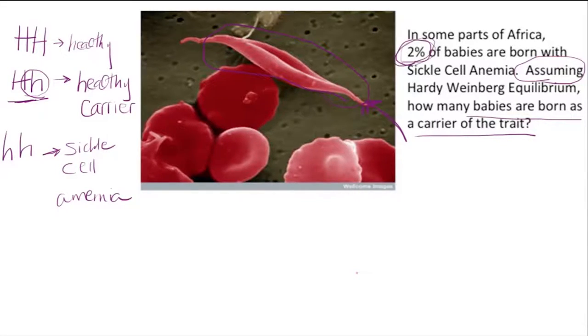In our question, we are looking at parts of Africa where 2% would be extremely high. We have two babies out of every 100 babies born that have sickle cell anemia, so 0.02 of the population are the individuals born with sickle cell anemia.